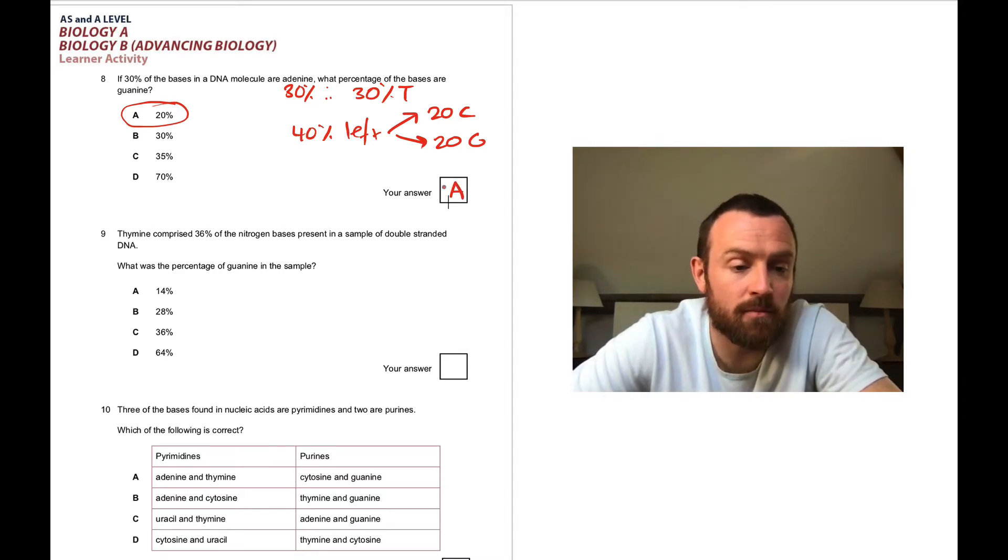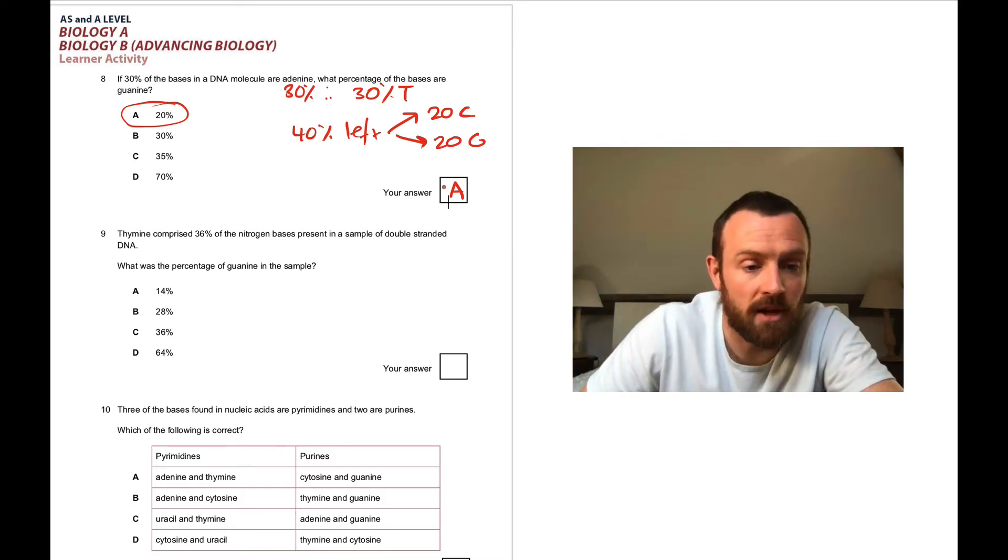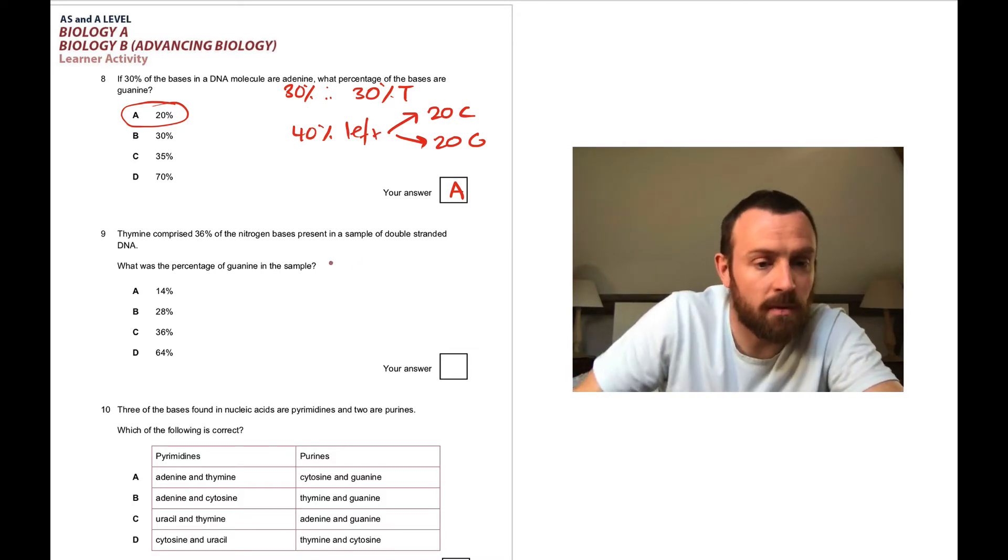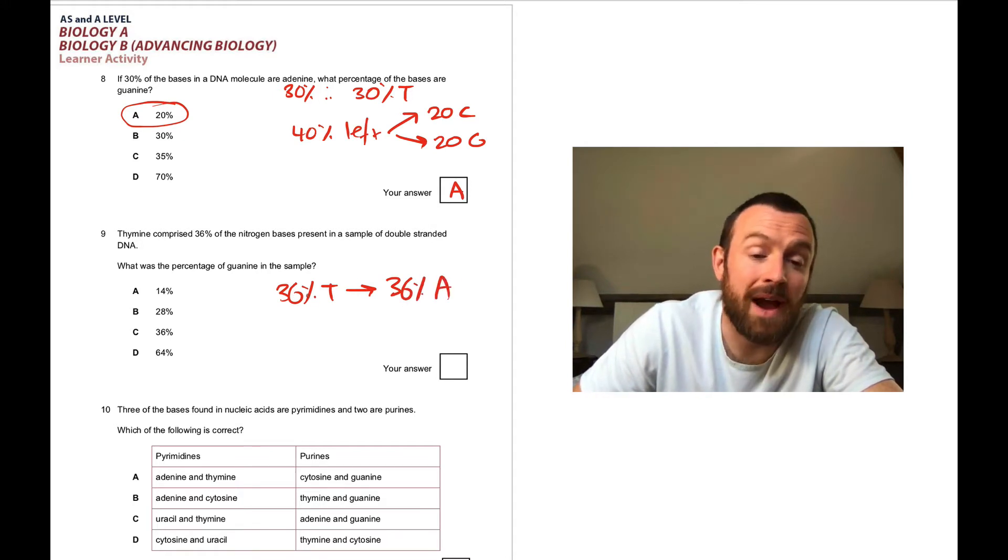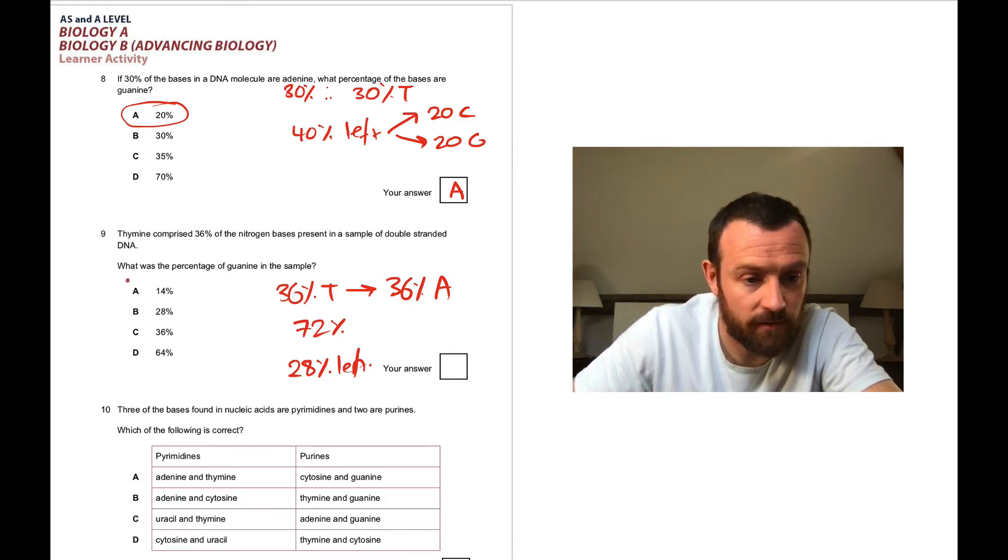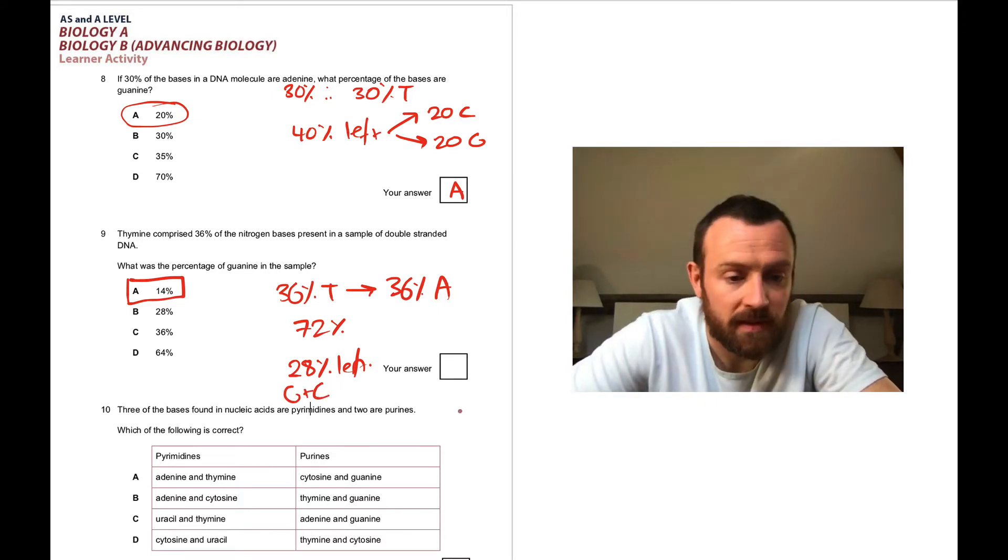Question nine: thymine comprised 36% of the bases in a sample of double-stranded DNA. Again, a bit of math here. 36 is thymine and 36 is A. If you add those together we've got 72% total, which means we only have 28% left. So half of 28% is 14. So G and C would be 28%, so G would be 14.